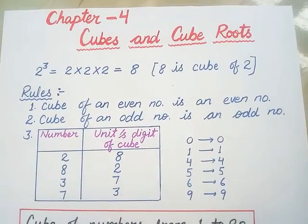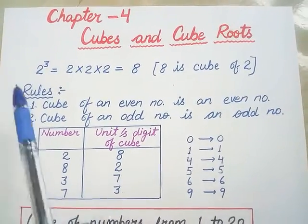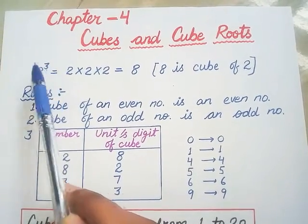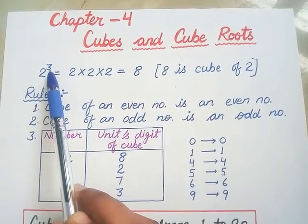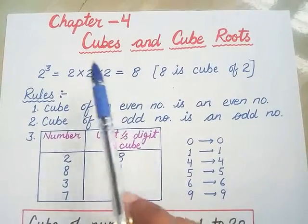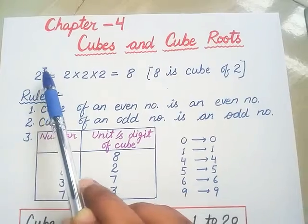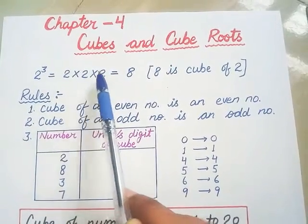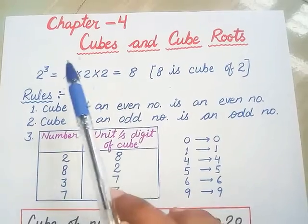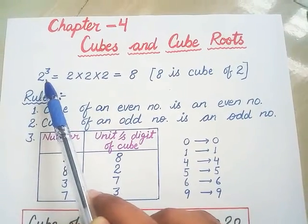First of all, what is cube? So students, when we raise a number to 3, like 2 raised to 3, by simplifying we get 2 into 2 into 2, so our answer is 8. Here 8 is a cube of 2. Is that clear students?